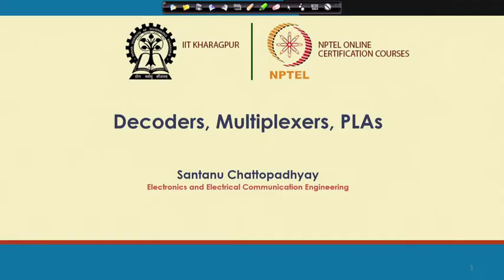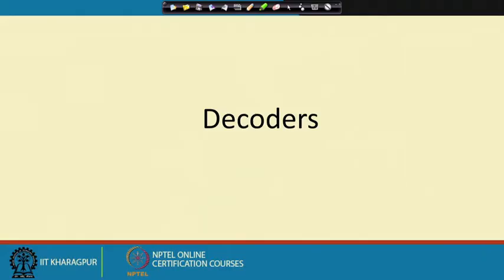Next we look into a topic that includes some more combinational logic elements: decoders, multiplexers, and PLAs. These are slightly higher level than the logic gates we have considered so far. They essentially consist of logic gates, but will have a good number of logic gates in them. For many cases, the function we want to realize is similar to one of these components. As a result, there are many integrated circuit chips that have been developed realizing these functions, so we can use those chips directly and the design process becomes simpler.